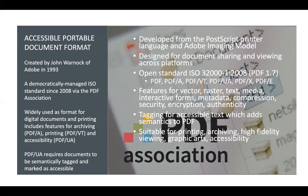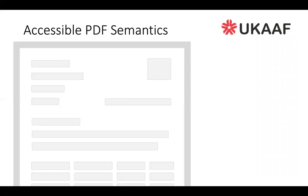The original standard ISO 32000-1 relating to PDF 1.7 has recently been superseded by ISO 32000-2 PDF 2.0, developed by a technical committee and working group with representatives from 20 countries. Accessible PDF or PDF/UA requires documents to be semantically tagged and marked so that they may be interpreted by assistive technologies and screen readers. Accessible PDF standards help in adding semantics to PDF documents.